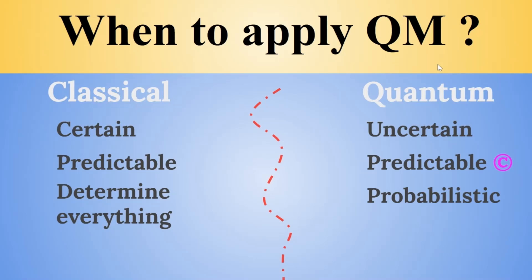The boundary between these two realms when the uncertain and probabilistic effects of quantum mechanics start to become relevant is really a dividing line between things that are large and things that are small. And that's not a particularly precise way of stating things.